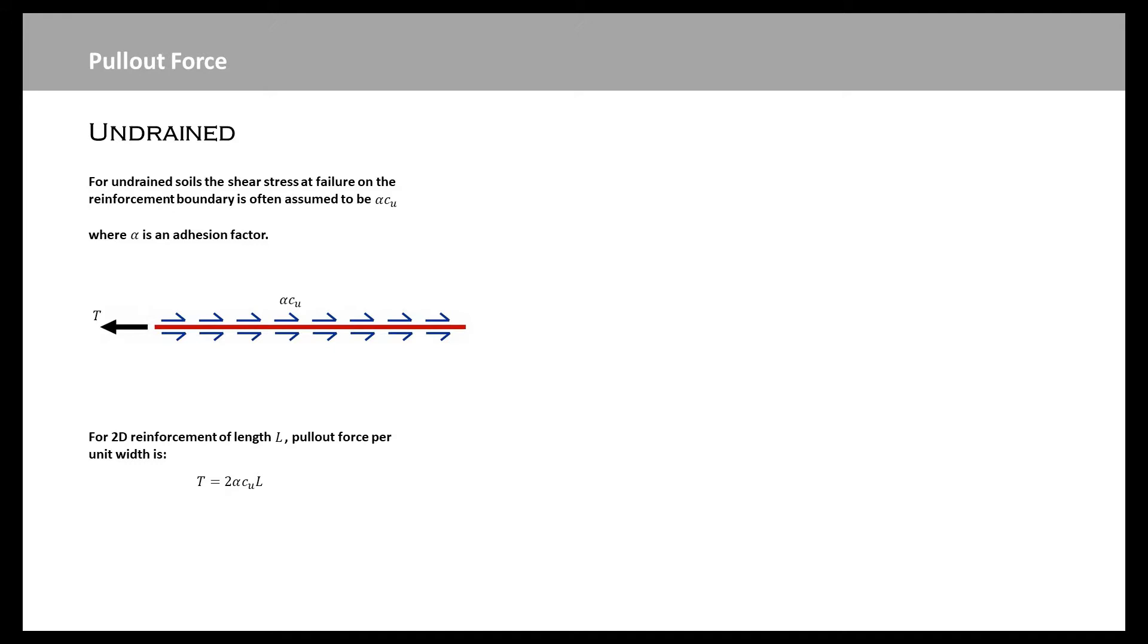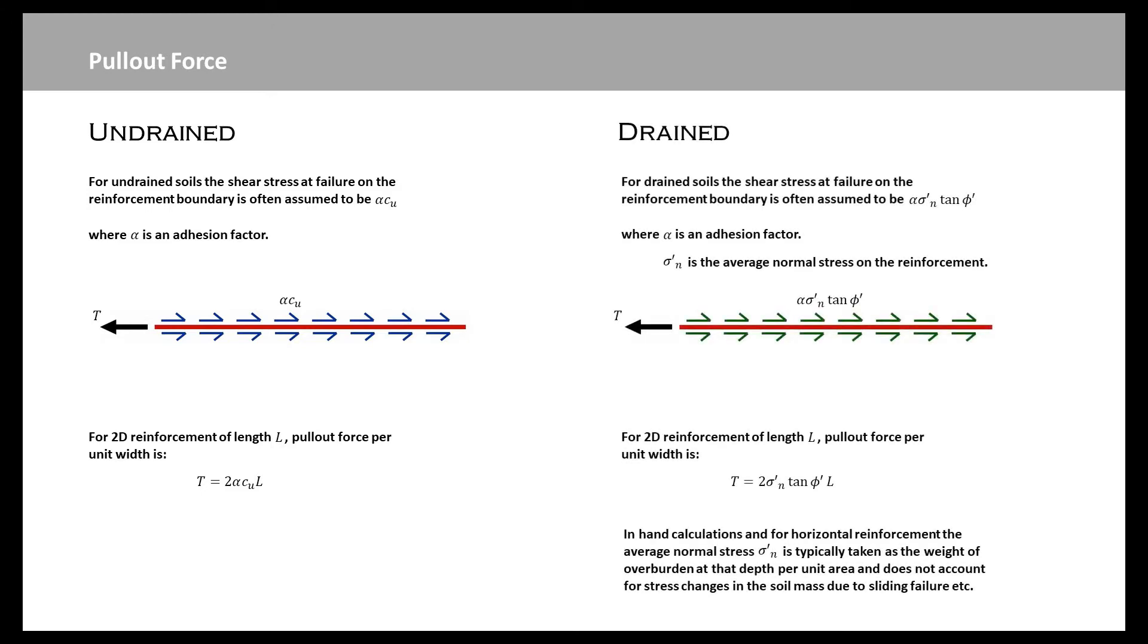And the normal approach that is taken is that through an undrained soil, it is assumed that the shear stress at the failure of the reinforcement boundary is equal to some factor alpha multiplied by the undrained shear strength. And if we are working with two-dimensional reinforcement of length L, then the pullout force per unit width is 2 alpha C_u L.